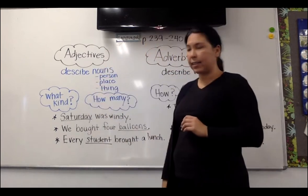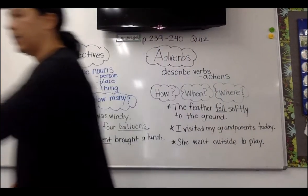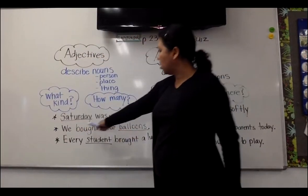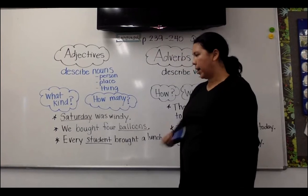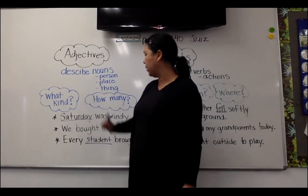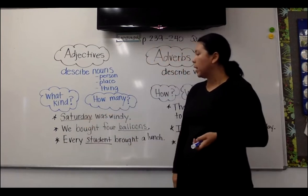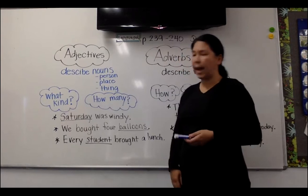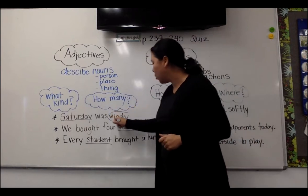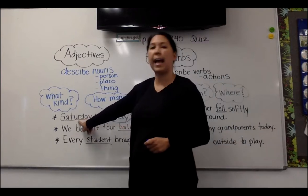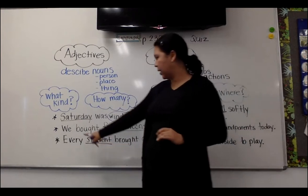So let's go through and read these sentences and see if we can find the adjective. Number one: Saturday was windy. Saturday is my noun — that's my thing, a day of the week. What kind of day was Saturday? It was windy. Windy is my adjective describing Saturday. It didn't tell us how many Saturdays — that wouldn't have made sense.